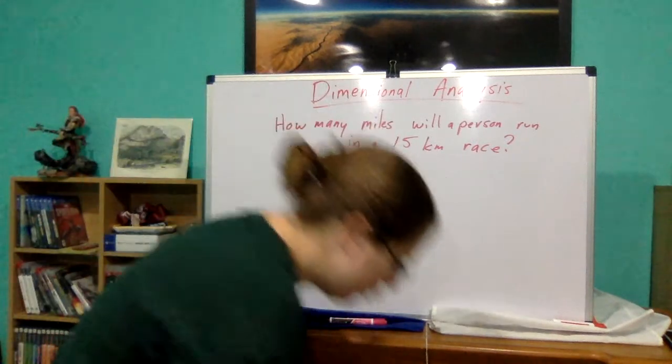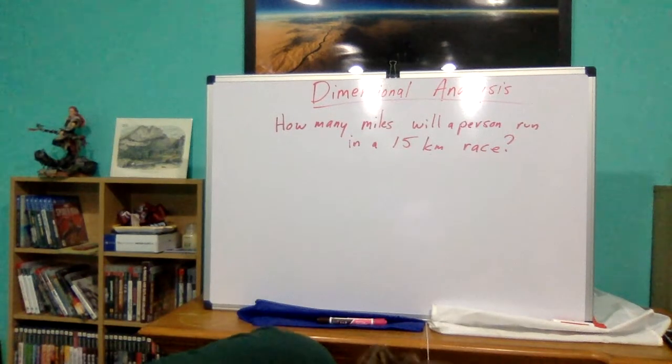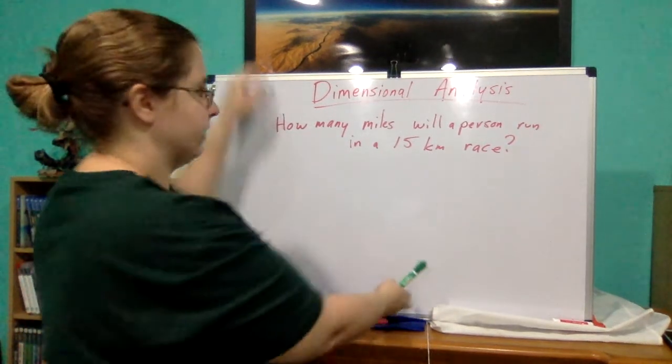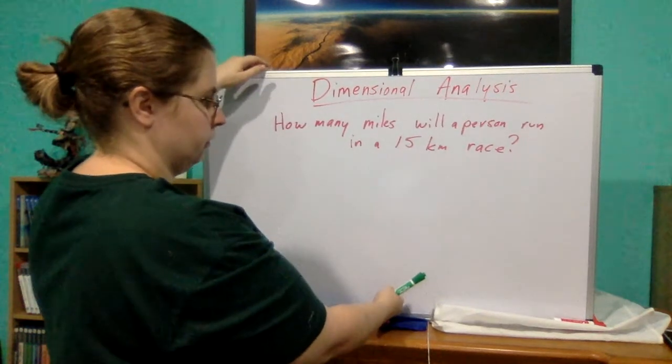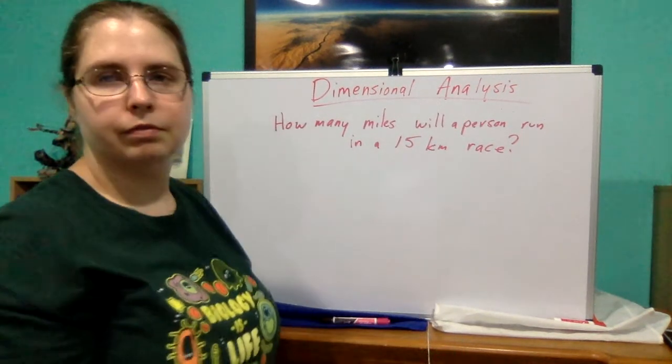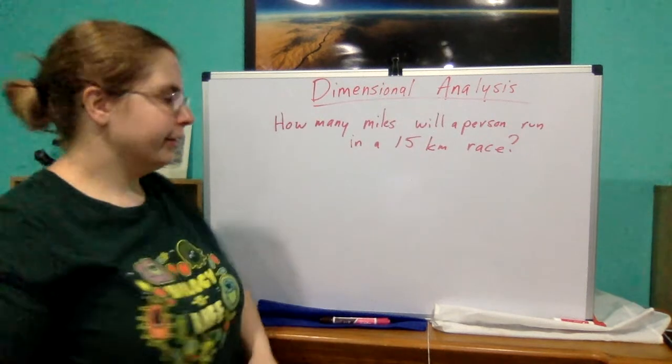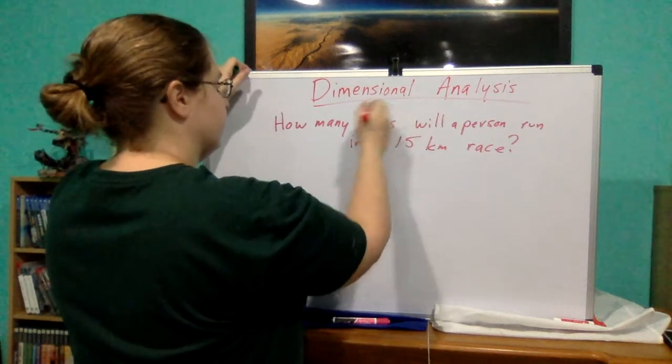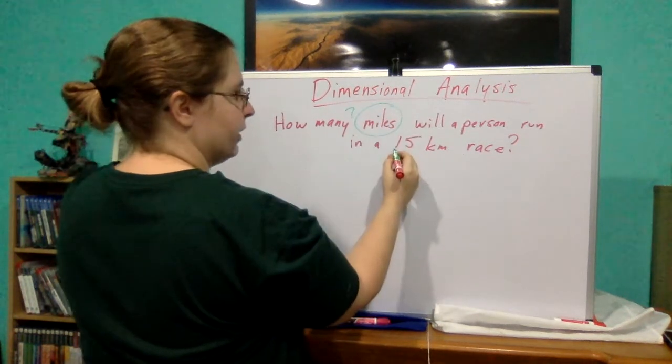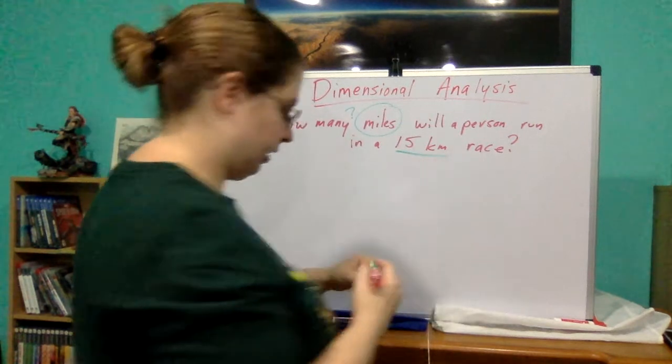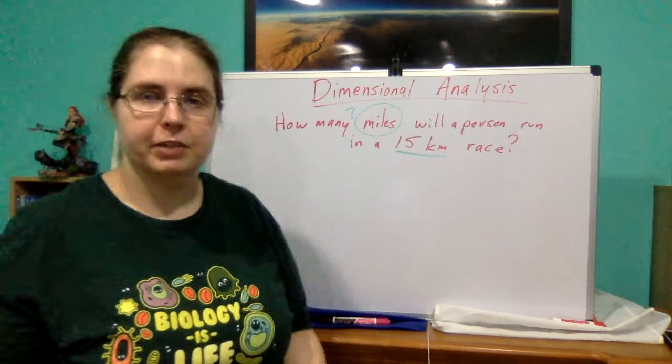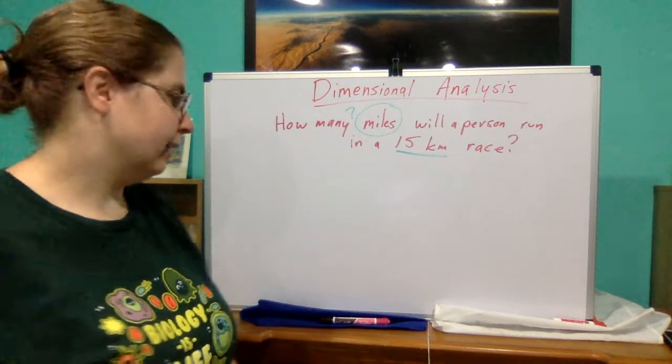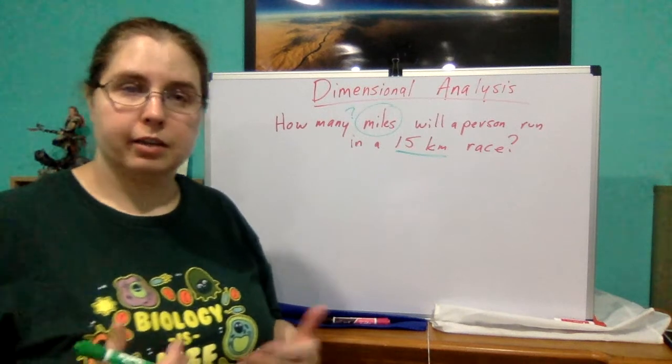Now, if you look at this, we have very, very different measurements. We have miles is what we're trying to figure out. And we know that the amount should be the same as 15 kilometers. Now, those are not the same. They're not even in the same unit. One is metric. One is not. So, that means we're going to have to go through and convert.